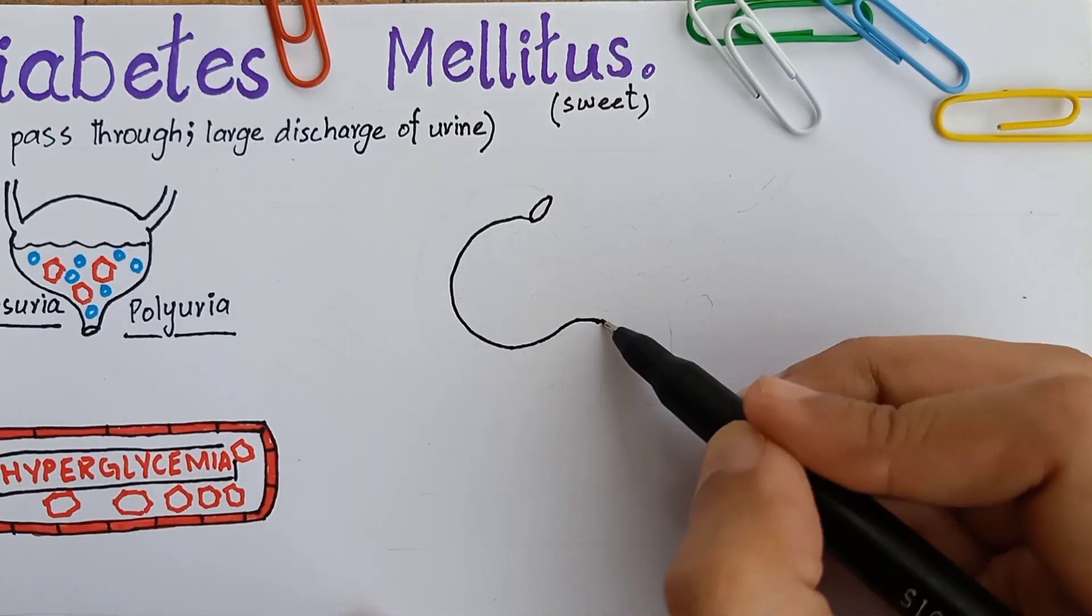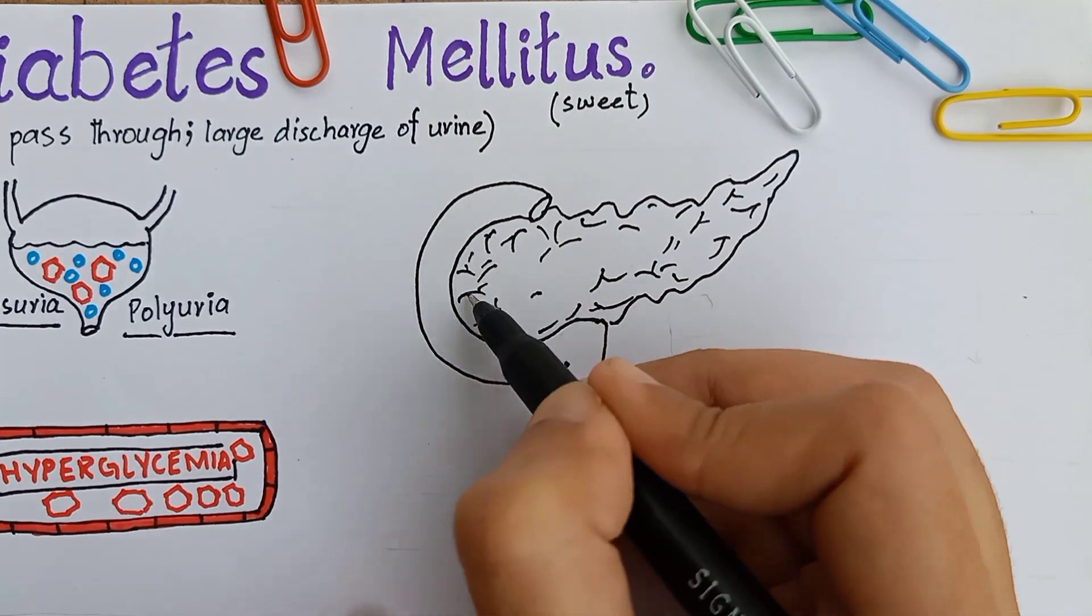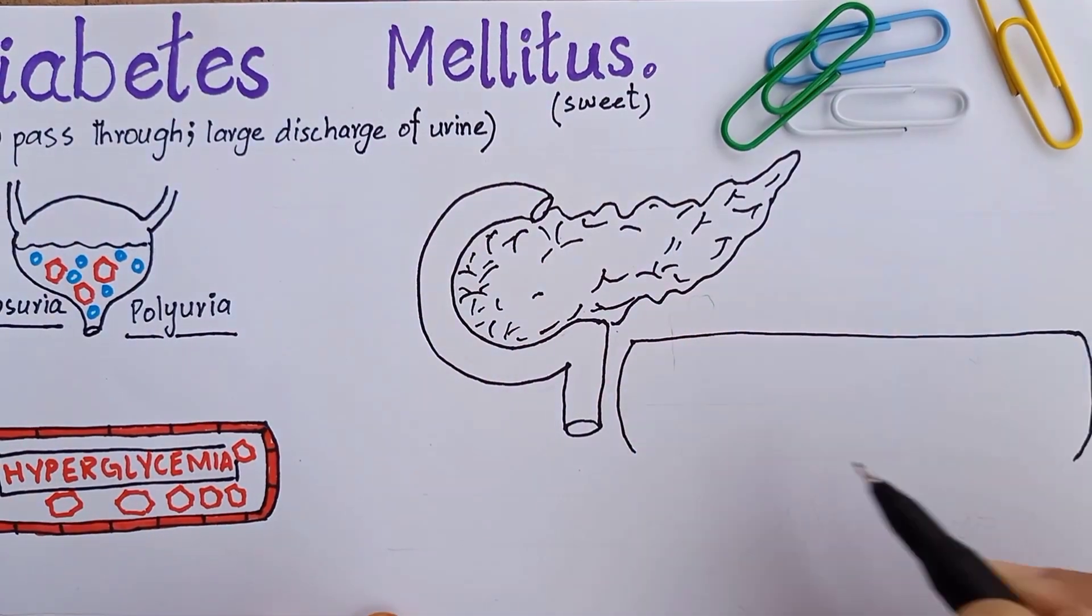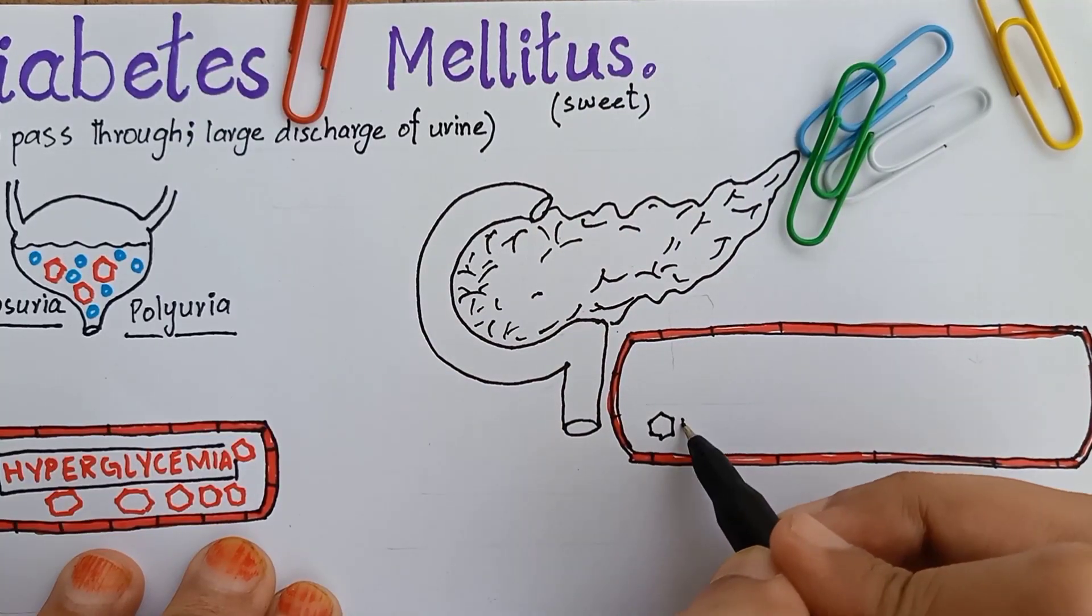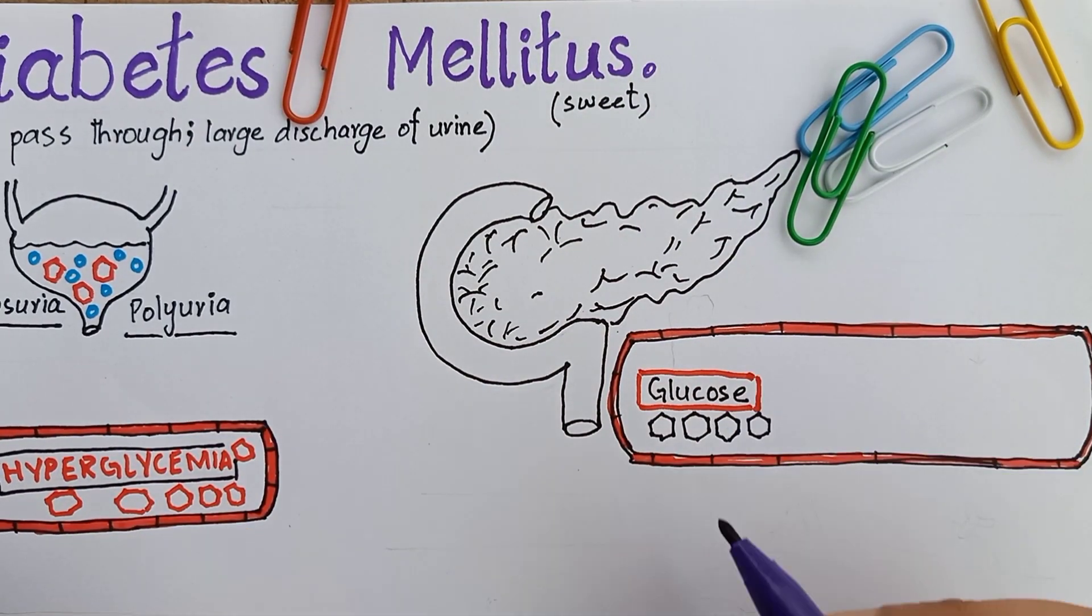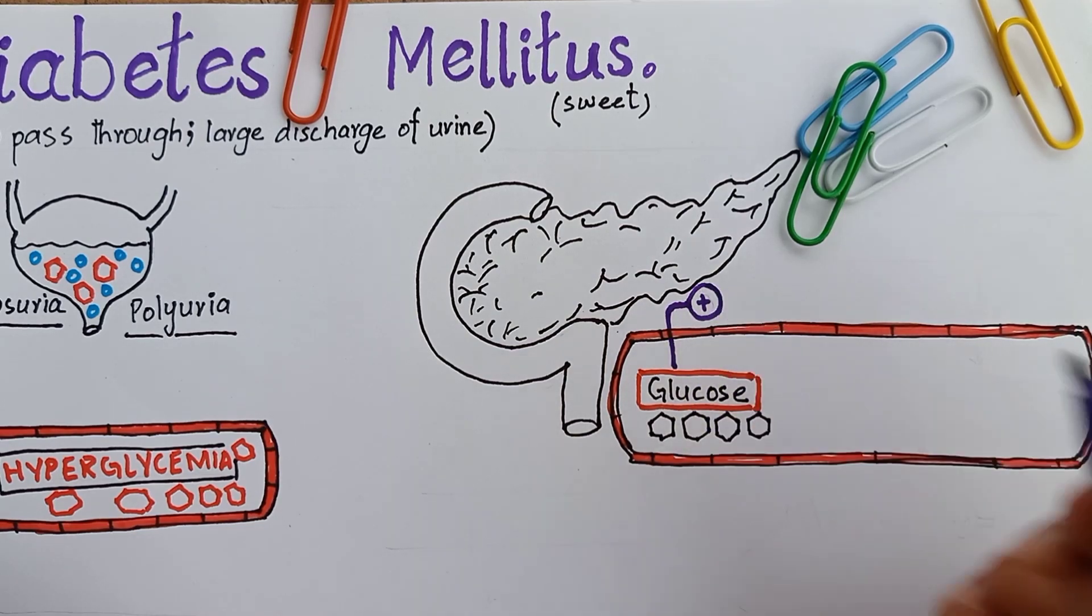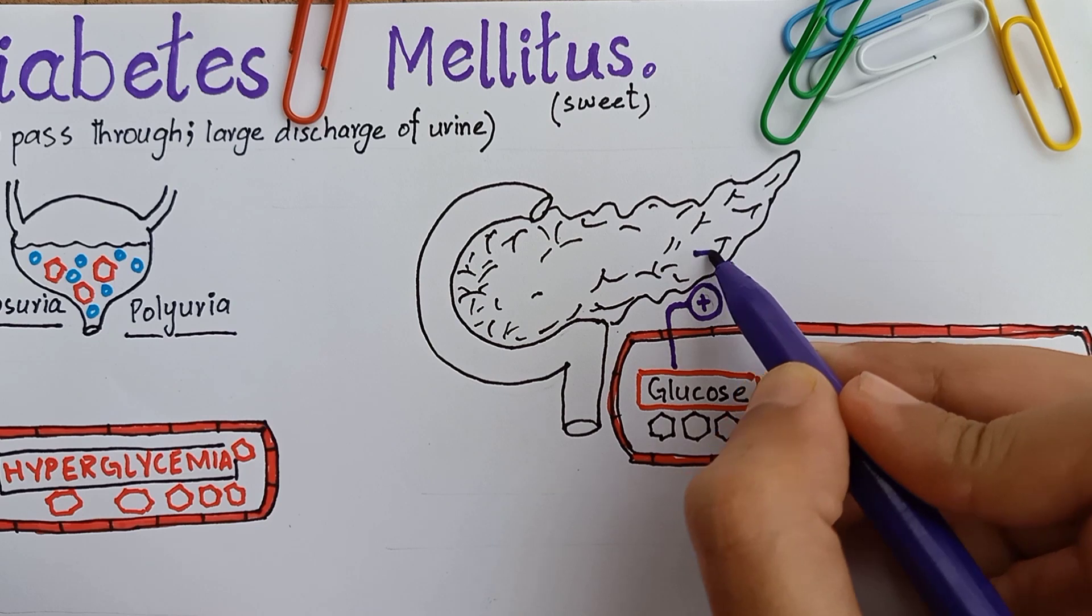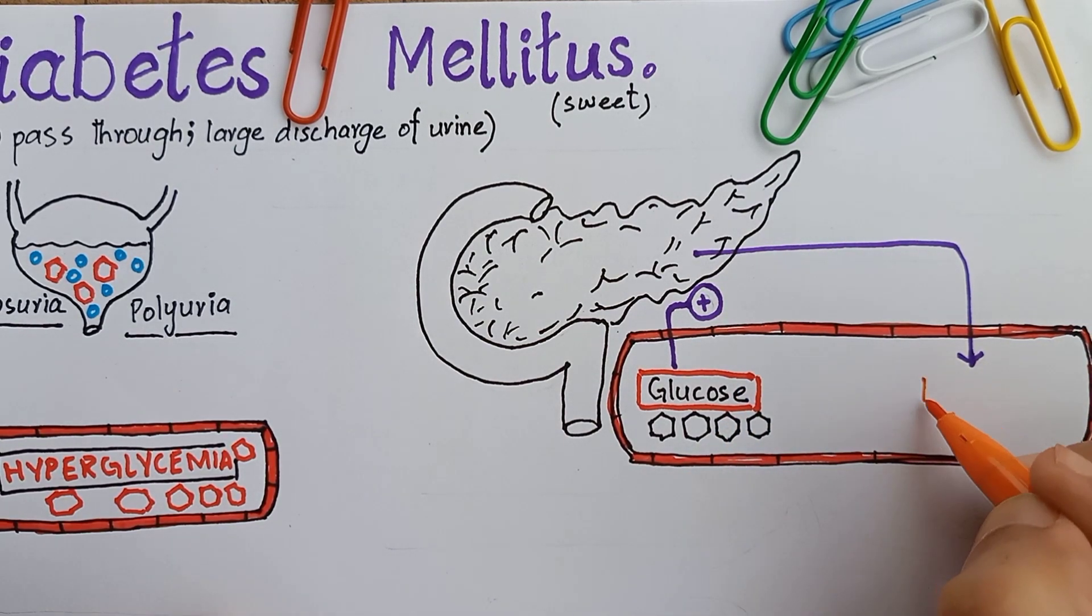In healthy individuals during the fed state, carbohydrates in food are broken down into glucose molecules. Glucose is taken by the bloodstream to different organs of the body. The beta cells of the pancreas are sensitive to blood glucose concentration. High blood glucose will stimulate insulin release from the pancreas.